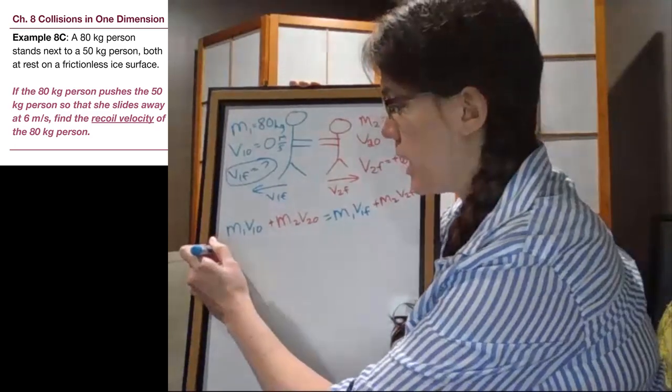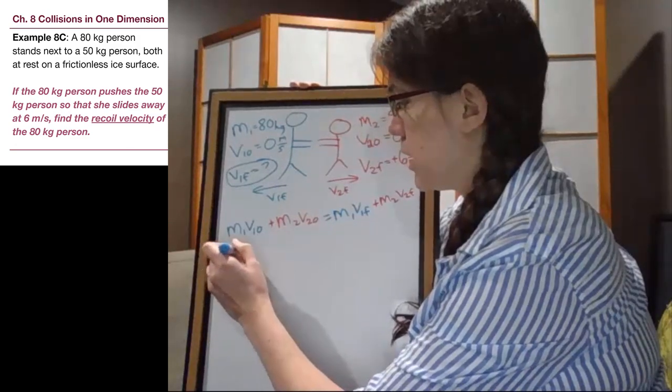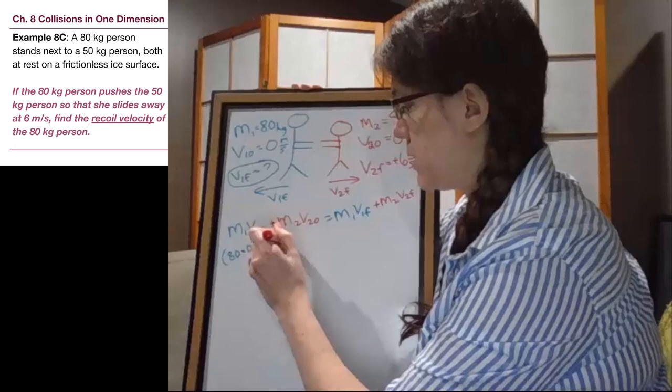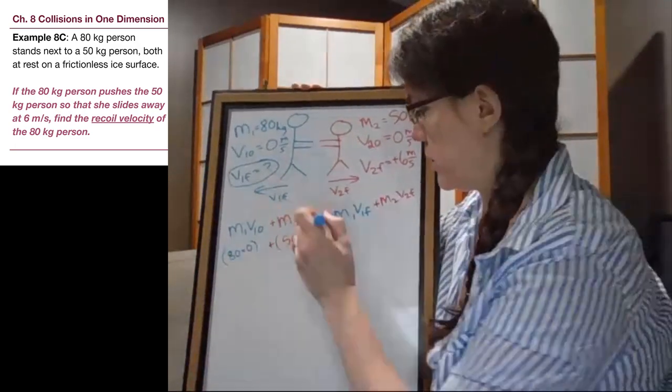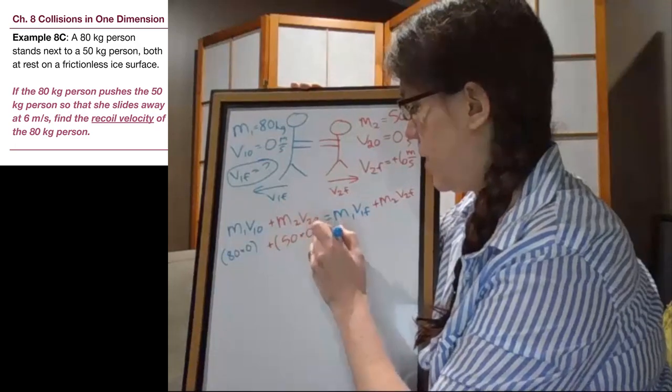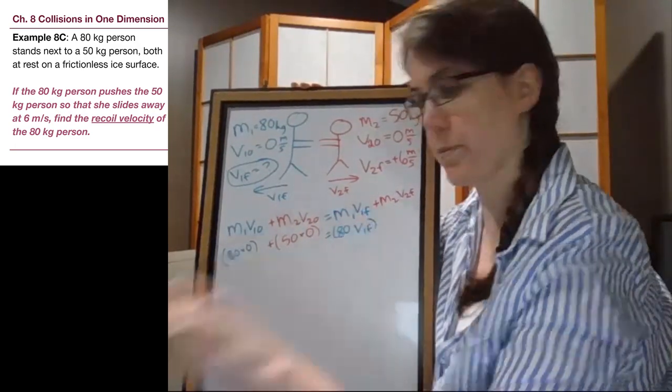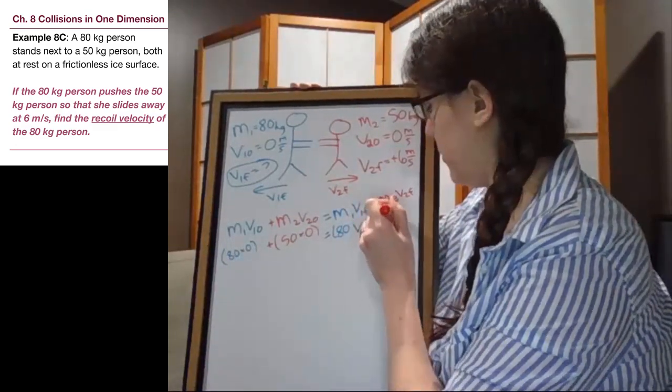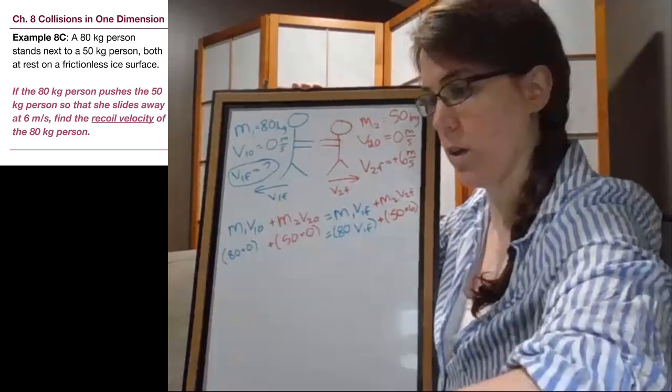And it's worth plugging in all of the numbers so that we recognize mathematically what we hopefully already can see from the picture. That there's not going to be any initial momentum. Because 80 times 0 plus 50 times 0 will all equal 0 for us. Then we have 80 times our unknown V1 final plus 50 times our positive 6.